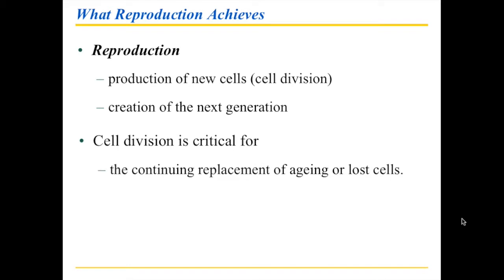When we look at cell division in general, cells need to divide so that all those cells that are aging or lost can be replaced. Think about how you lose cells — every time you eat something, some cells in your mouth get scraped off by the food. When you swallow, cells are rubbed off as food goes down. Every time you go to sleep, a bunch of cells are lost to your bedding because they are aging and dying.